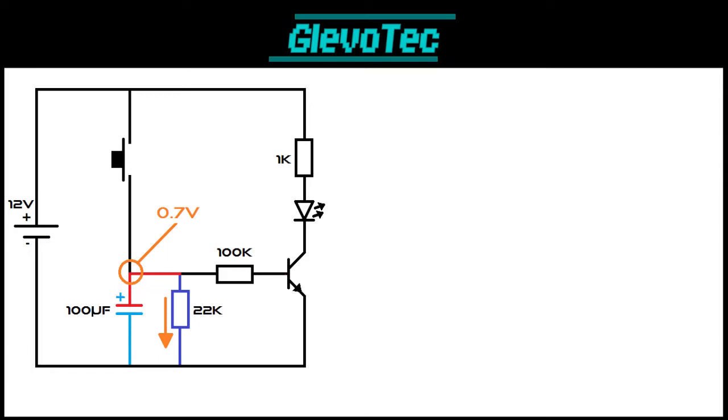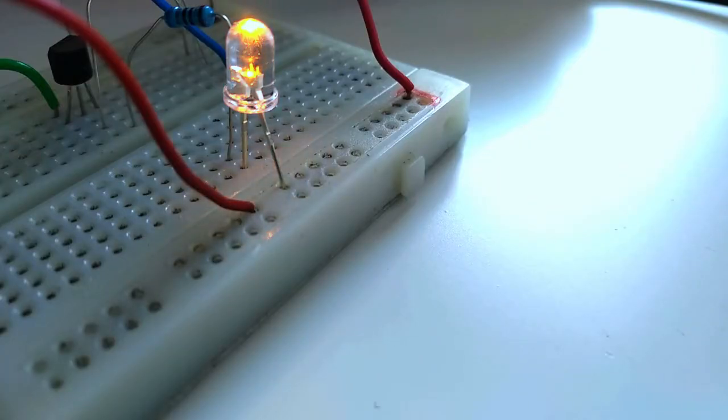This happens around a 0.7 volt point. This leads to the LED fading out instead of switching off clean.